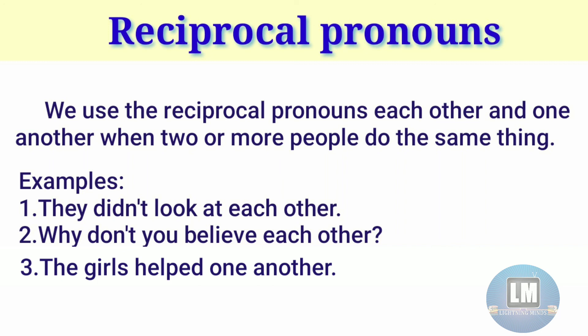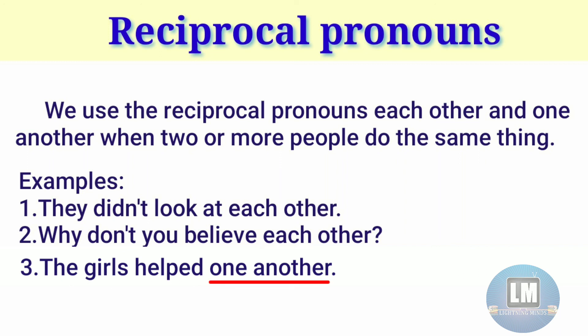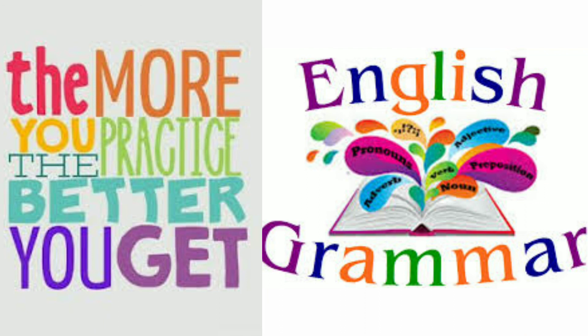And last, reciprocal pronouns. We use reciprocal pronouns 'each other' and 'one another' when two or more people do the same thing. 'Each other' refers to two people, while 'one another' is used when there are more than two. Example sentences: 'They didn't look at each other' — 'each other' is a reciprocal pronoun. 'Why don't you believe each other?' — 'each other' is a reciprocal pronoun. 'The girls helped one another' — 'one another' is a reciprocal pronoun. This is all about the 10 types of pronouns.